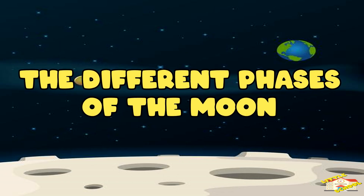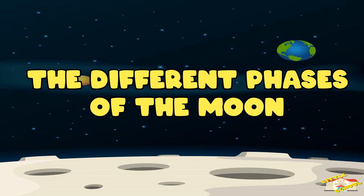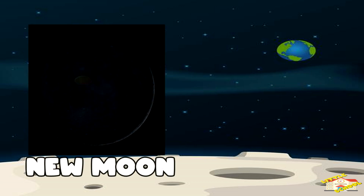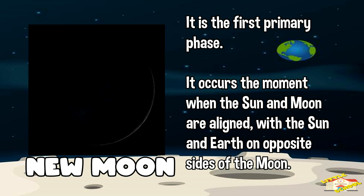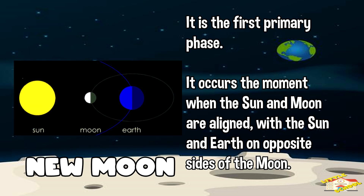So let's continue further with the phases. The new moon is the first primary phase and it occurs the moment when the Sun and the moon are aligned, with the Sun and Earth on opposite sides of the moon.